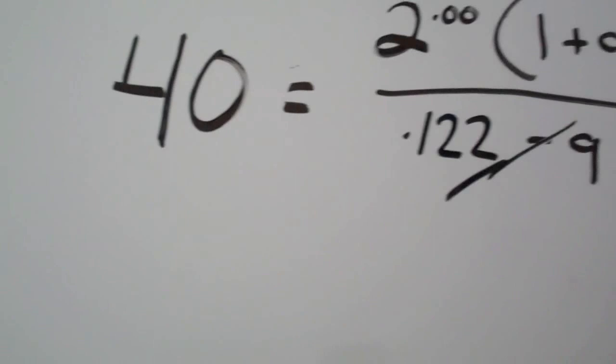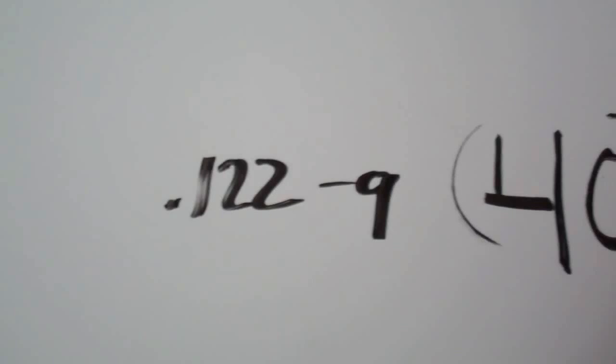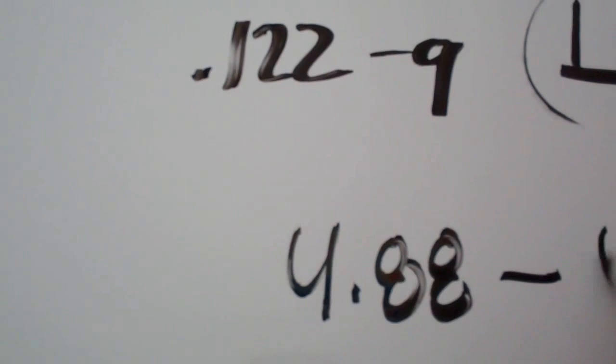And then you have to do the same thing on this other side here. So then you're going to multiply 40 by 12.2 minus G. So if you divide that through on 40, you're going to get 4.88. That's the 12.2 times 40. And then you're just going to get a negative 40G.